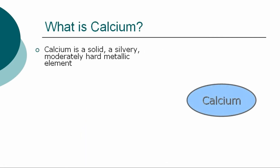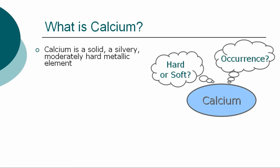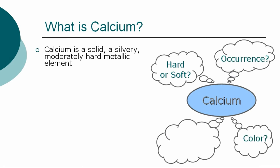What is calcium? In a general overview of the element, we can at first describe calcium as a solid — a solid, silvery, moderately hard metallic element.